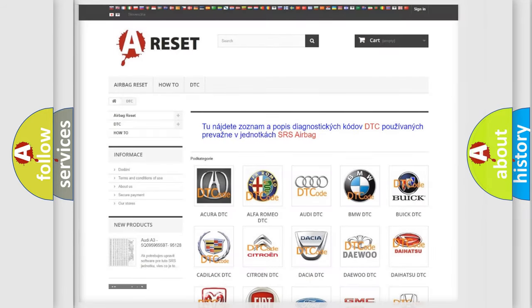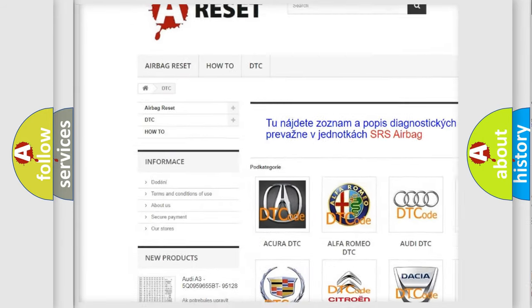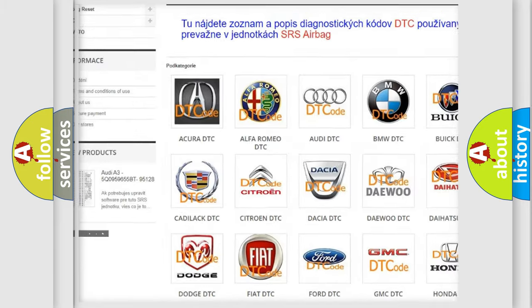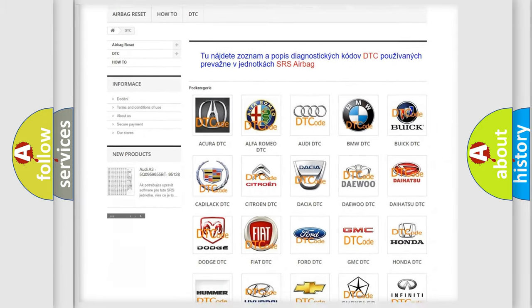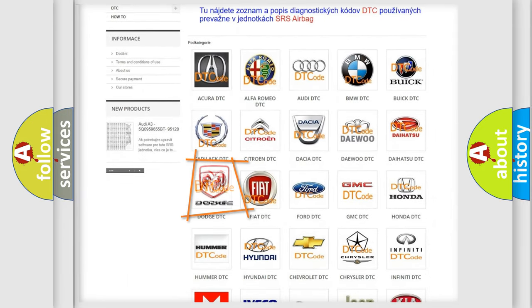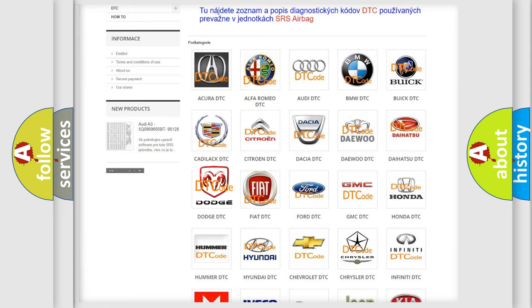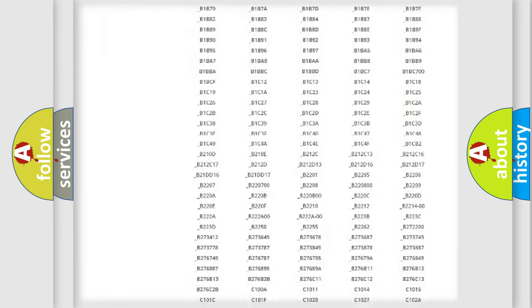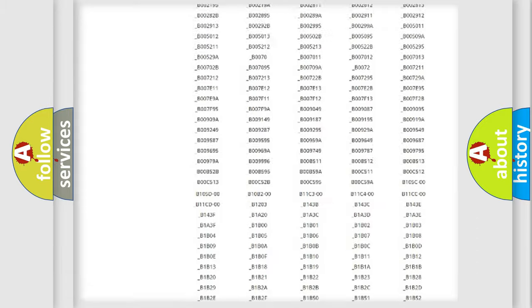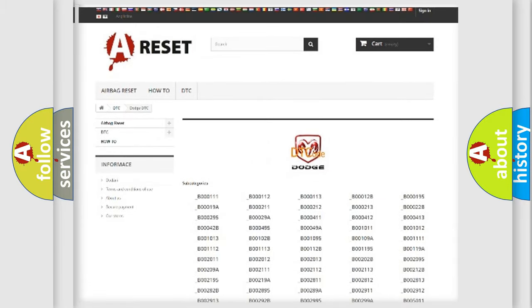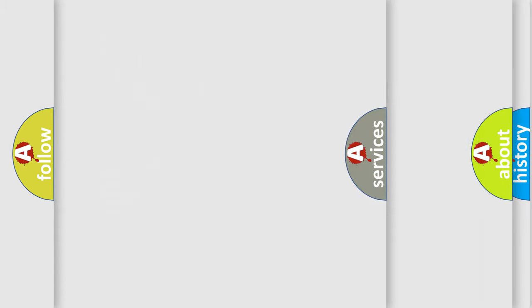Our website airbagreset.sk produces useful videos for you. You do not have to go through the OBD2 protocol anymore to know how to troubleshoot any car breakdown. You will find all the diagnostic codes that can be diagnosed in Dodge vehicles, also many other useful things.